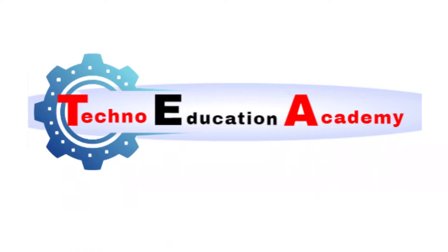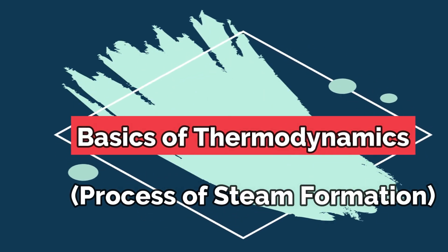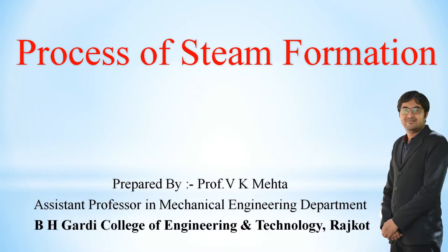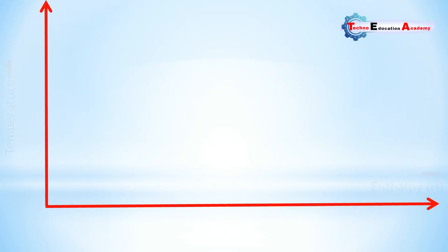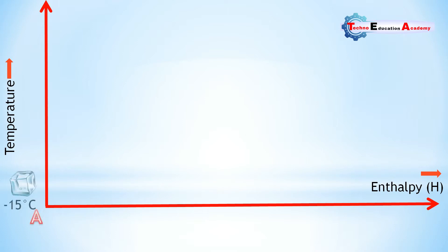Hello friends, welcome back to my channel Techno Education Academy. In this video lecture we will discuss the process of steam formation with graphical representation. Consider 1 kg of ice at minus 15 degree Celsius, represented by point A on the temperature versus enthalpy diagram. This is the initial condition of the sample of ice.